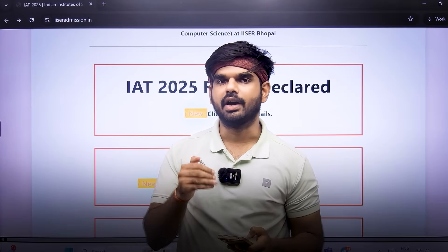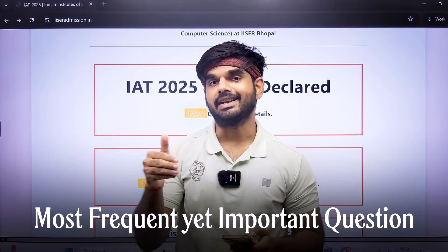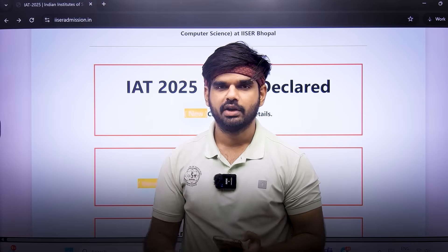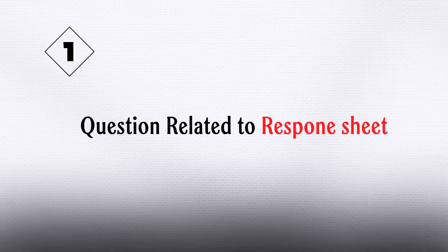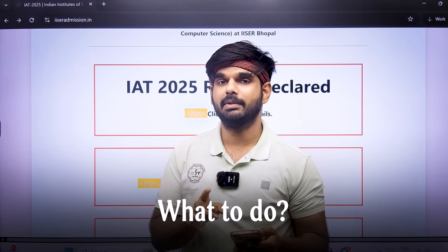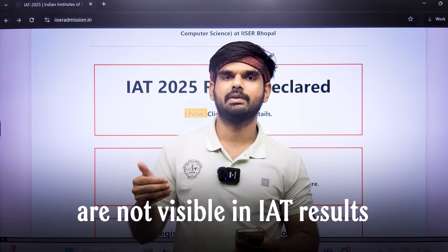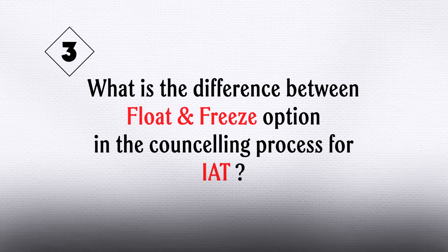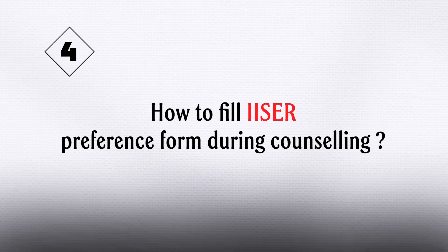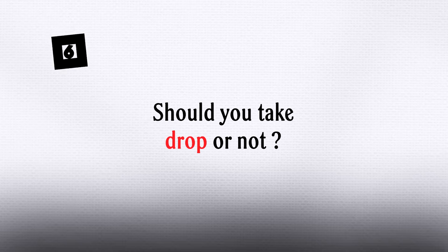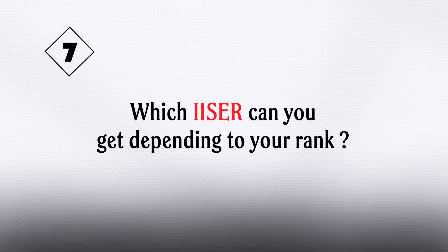Hello everyone. In this video we are going to answer some of the most frequent yet important questions that have been asked by all of you. The questions are: number one, a question related to the response sheet not being available; number two, the PWD category rank not visible in the IAT results; number three, the difference between float and freeze in the IAT counseling process; number four, how to fill the IISER preference form; number five, should you take IITs or IISERs; number six, should you take a drop or not; and number seven, which IISER can you get depending on your rank.